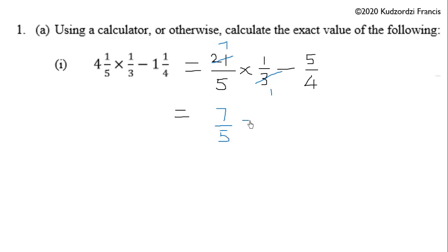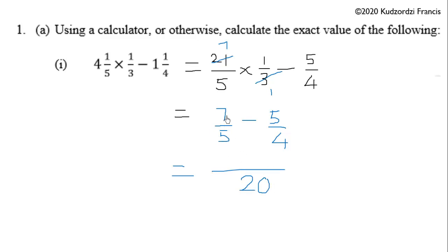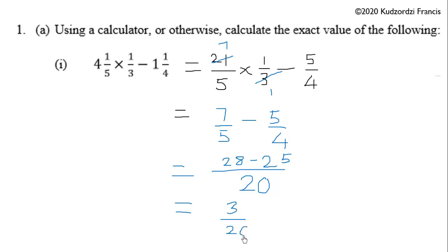So we have 7 over 5 minus 5 over 4. The next thing is we find the LCM of 5 and 4, which is 20. 5 goes into 20 four times, and 4 times 7 is 28. 4 goes into 20 five times, and 5 times 5 is 25. So 28 minus 25 is 3, giving us 3 over 20 as the exact value.